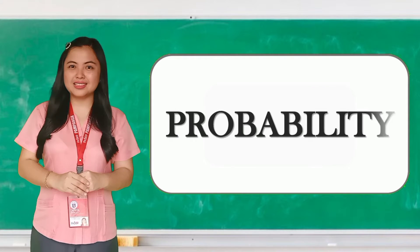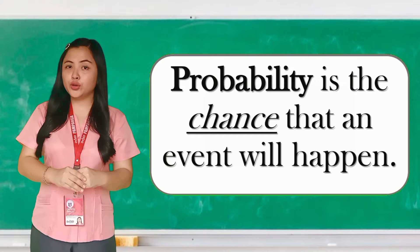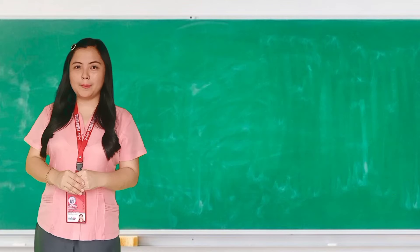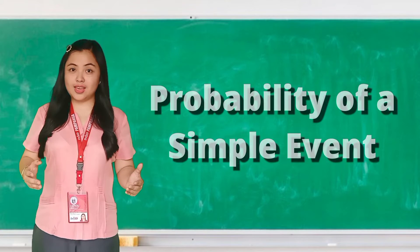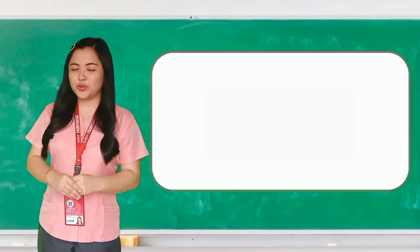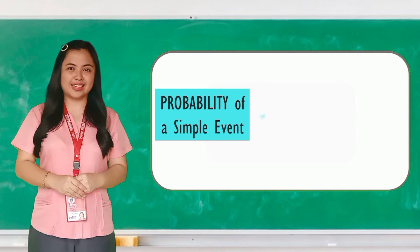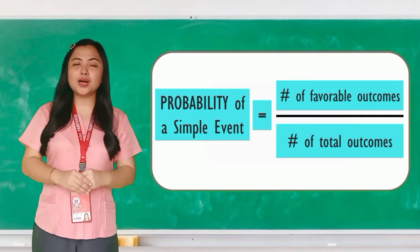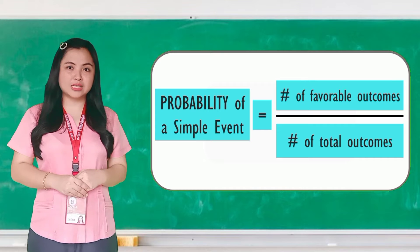Probability is the chance that an event will happen. For you to better understand this, let's talk about the probability of a simple event. When finding the probability of a simple event, we will be using a formula. The probability of a simple event is equal to the number of favorable outcomes over the number of total outcomes.